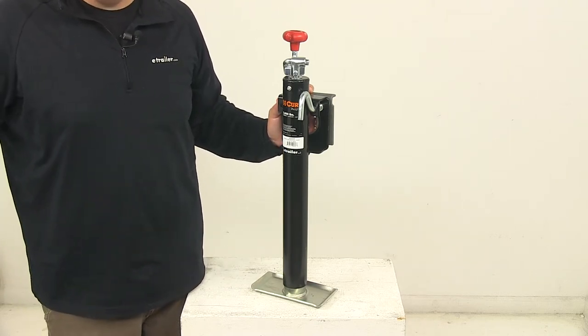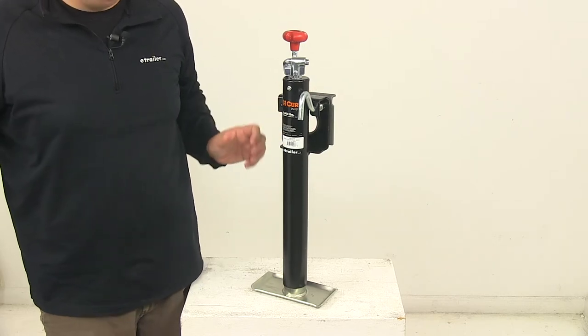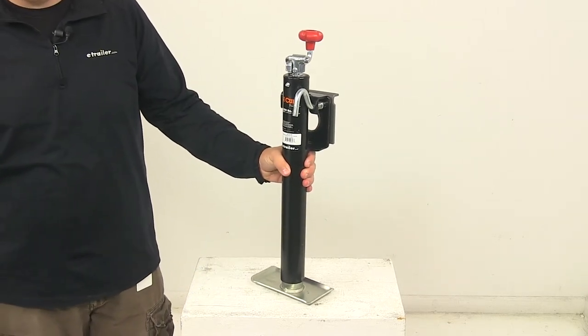Today we're going to be taking a look at a Curt round snap ring swivel trailer jack. This jack features a capacity of up to 2,000 pounds.